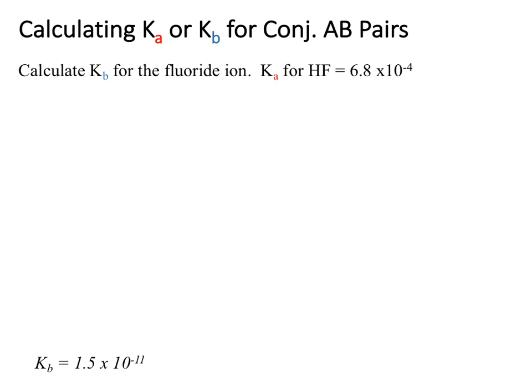For this problem, we can utilize conjugate acid and base pairing to calculate Ka or Kb for a specific substance. It asks us to calculate Kb for fluoride ion given the Ka value for HF. Notice these have to be conjugates of one another, meaning they share an ion in common. The fluoride ion is what is common to HF.